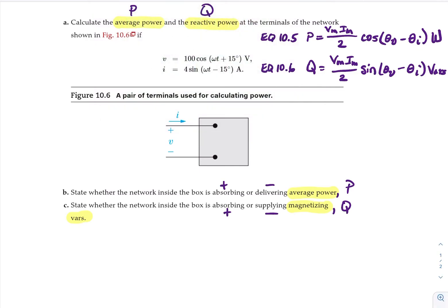So our max amplitude of the voltage is 100, so V sub M equals 100. I sub M equals 4. And our phase shift for voltage is theta sub V equals plus 15 degrees. And theta sub I equals minus 15 minus 90.